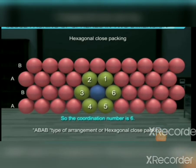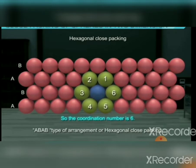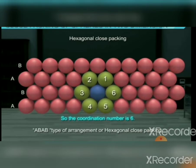Now consider hexagonal close packing. Here the second row of spheres is placed in the depressions of the first row. If the first row is type A, the second row is type B, and the third row is again type A, giving an ABAB type arrangement. The free space is less compared to square close packing, making the packing more efficient. Each sphere is in contact with six others, so the coordination number is six. When the centers of the six spheres are joined, we get a hexagon — hence the name hexagonal close packing.